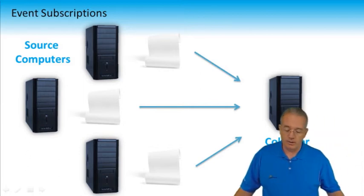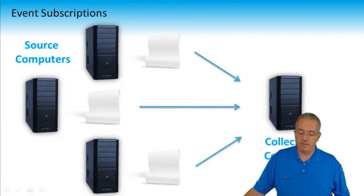With source computer-initiated, you have two settings: minimize bandwidth and minimize latency. Minimize bandwidth limits the frequency of network connections, with a bandwidth timeout of about six hours. Minimize latency delivers events within 30 seconds. If you're bandwidth-constrained on your WAN connectivity, you may want minimize bandwidth — but it could be up to six hours before you hear about an issue.